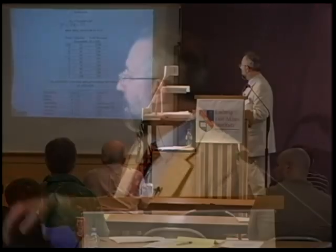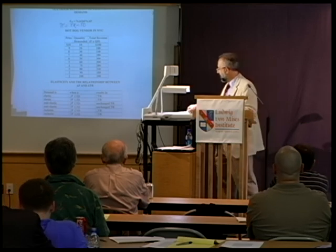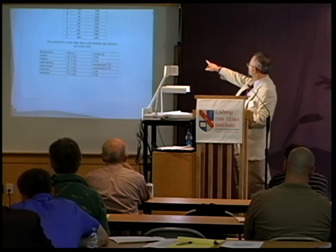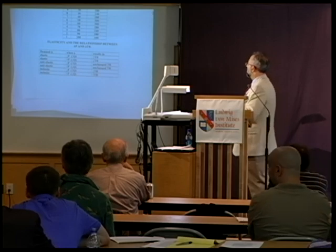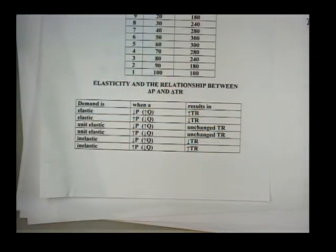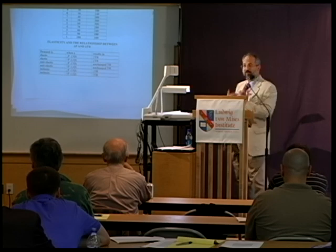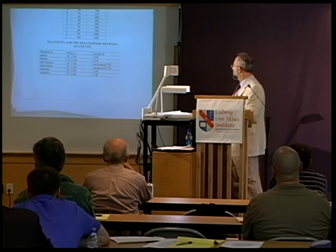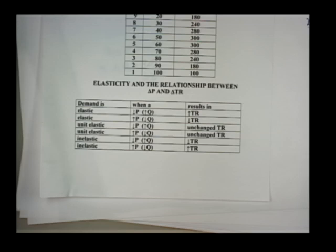That is a linear, downward sloping demand curve. As we'll see, in the real world that doesn't necessarily exist. But let's look at elasticity and the relationship between a change in price and a change in total revenue. To sum up: you are in an elastic area of your demand curve when, if you cut your price, your total revenue goes up — people increase their quantity by more in percent terms than the price is falling.